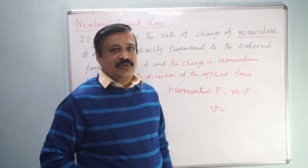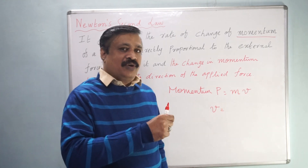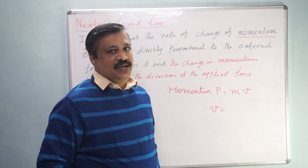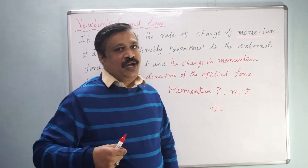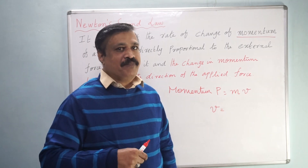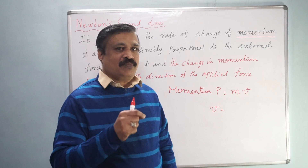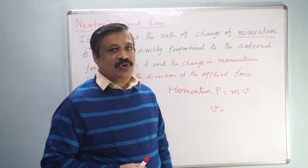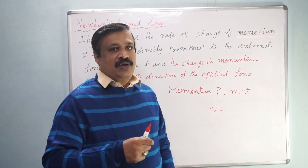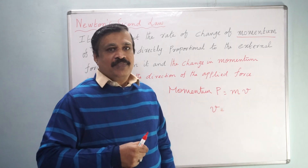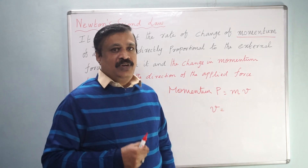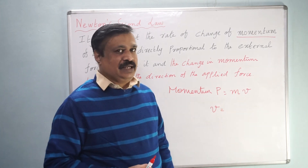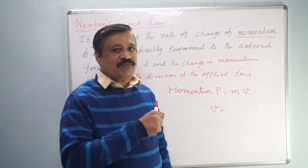If you say 50 km per hour in the east direction, then it is called velocity. Usually in day-to-day life we speak about speed, which is a scalar quantity. But velocity is a vector quantity — we have to say 50 km per hour in the north direction, west direction, front direction — then it is called velocity.